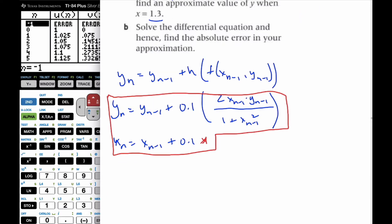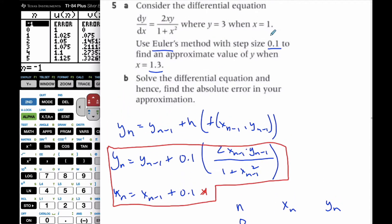All right, so we're going to set up our table for n, for x_n, and y sub n. And I know this is going to be 0. My initial value when x is 1, y is 3.